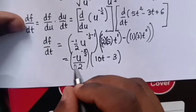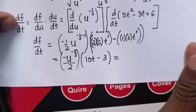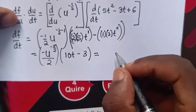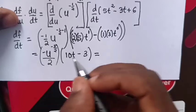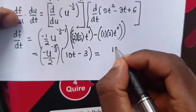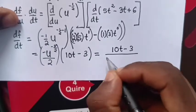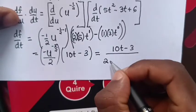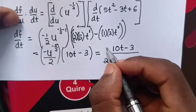Then, we multiply. So, here it will be, write first 10t, 10t minus 3, over 2, u in the numerator into denominator.